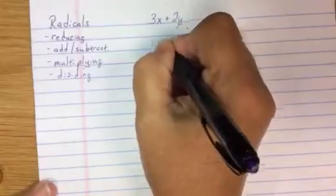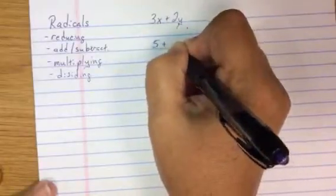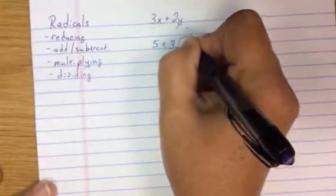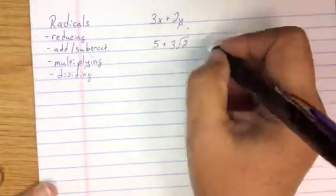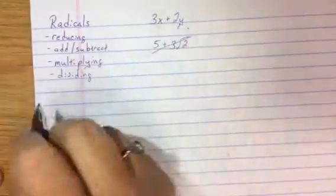So if I have 5√3 + 3√2, I can't add it. I can't go 5 plus 3 is 8, no radical. That's it, no further.